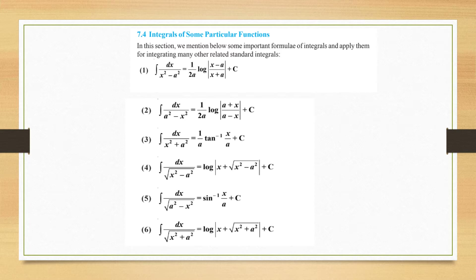Formula number 1: the integral of 1 upon (x² − a²) dx equals 1 upon 2a into log |x − a / x + a| + C, where one term involves your variable and the other is a constant. And the formula for integral of 1 upon (a² − x²) is 1 upon 2a log |a + x / a − x| + C.